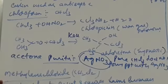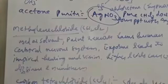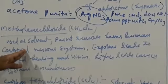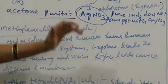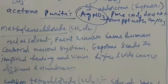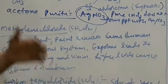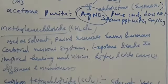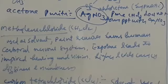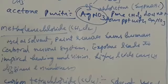Next, methylene chloride — another polyhalogen compound with formula CH2Cl2, having two chlorine atoms. Its main use is as a solvent and paint remover. Excess exposure to methylene chloride causes harm to the human central nervous system, and more exposure leads to impaired hearing and vision, as well as dizziness and numbness.